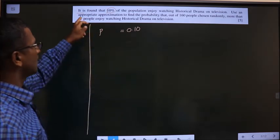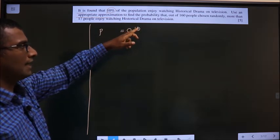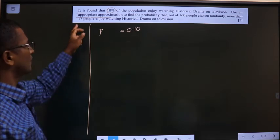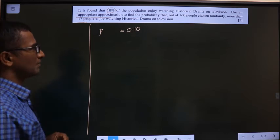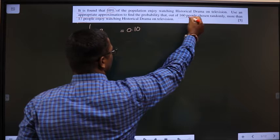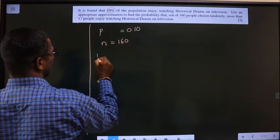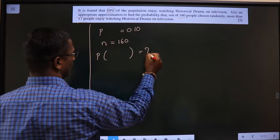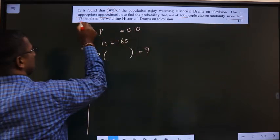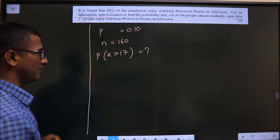Use an appropriate approximation to find the probability that out of 160 people chosen randomly more than 17 people enjoy watching historical drama on television. So here 160 is nothing but total number of people, and you need to find probability of what condition means more than 17 people. So x greater than 17 because he said more than 17.